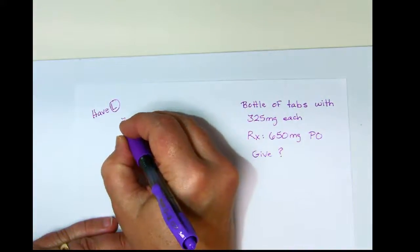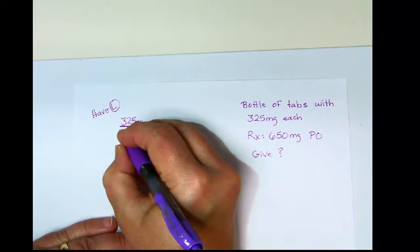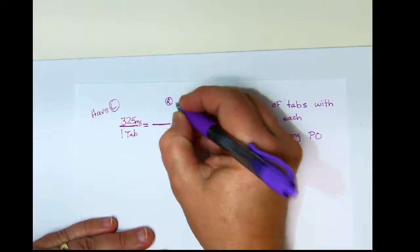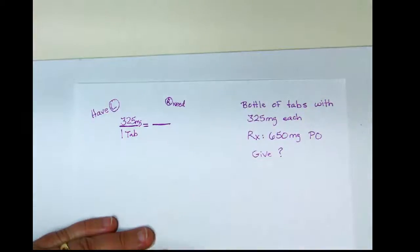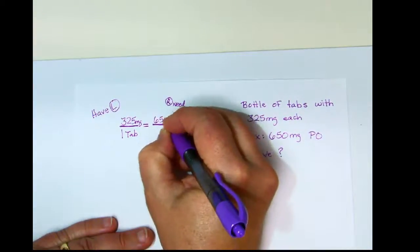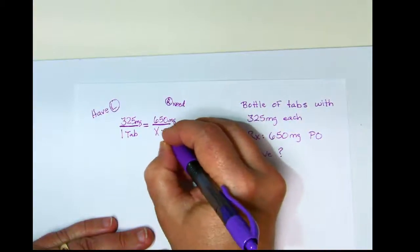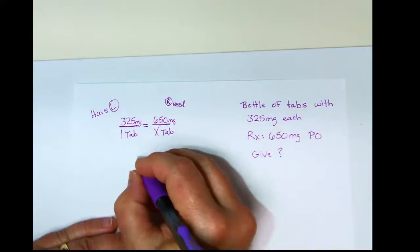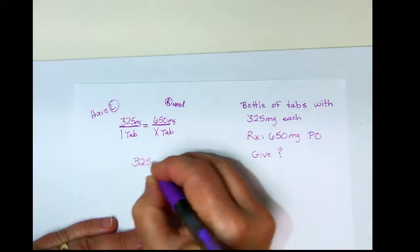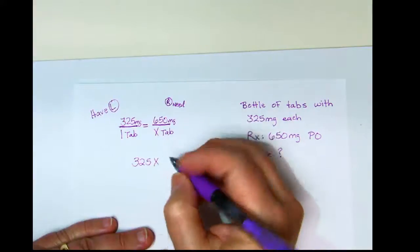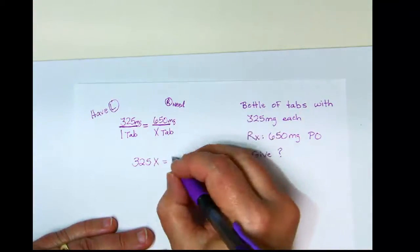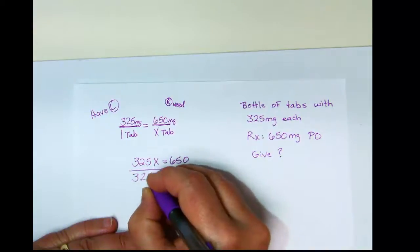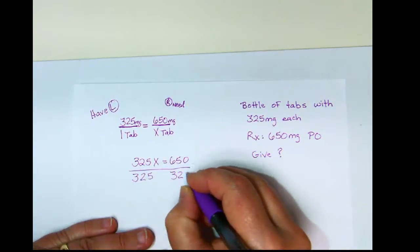I have 325 milligram tablets. On the right hand side is what I need — I need 650 milligrams. I'm solving for how many tablets I will give. By doing cross multiplication, 325 times x is 325x, and 1 times 650 is 650. To get x by itself, I divide whatever's in front of the x away — what I do to one side I do to the other.